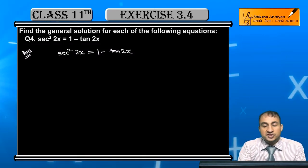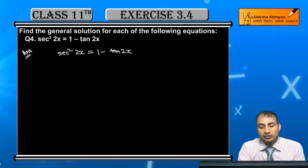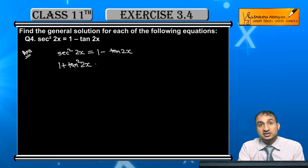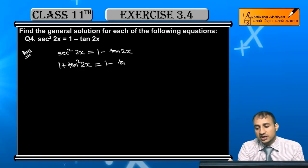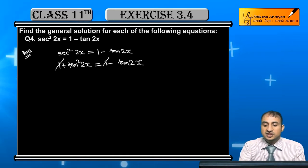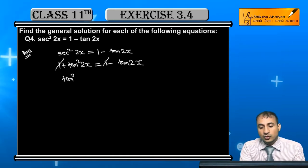Let's solve this equation. Now sec²2x is equal to 1 + tan²2x. That equals 1 - tan2x. Further, students, the 1's cancel out. So tan²2x + tan2x = 0.